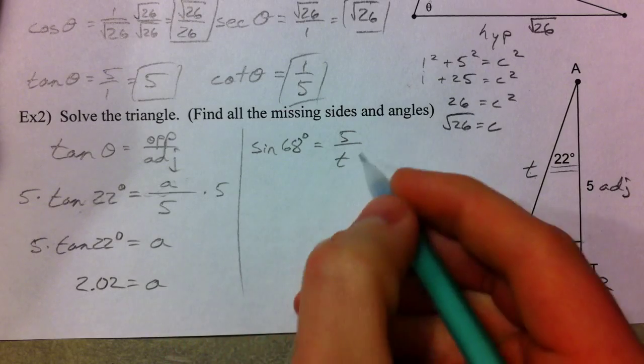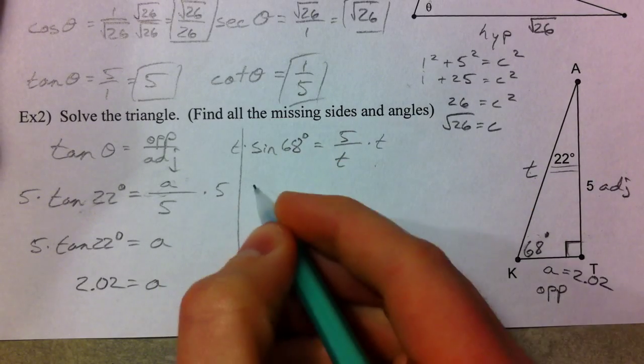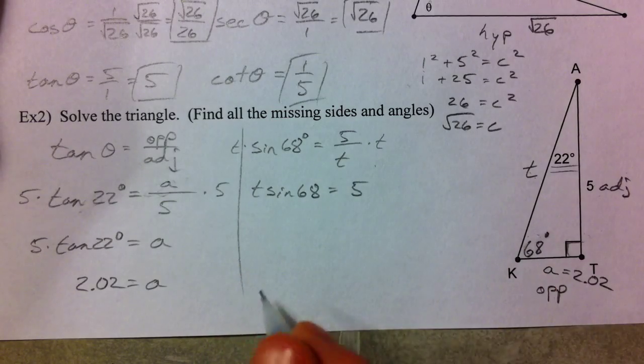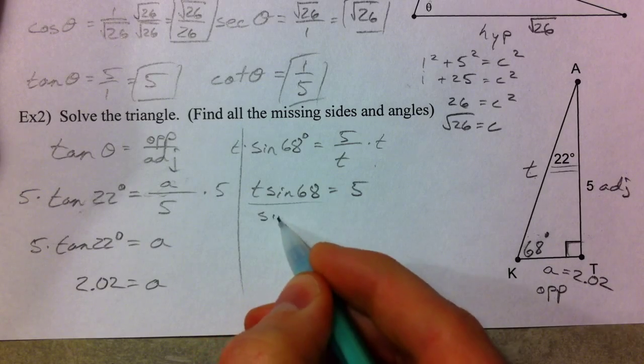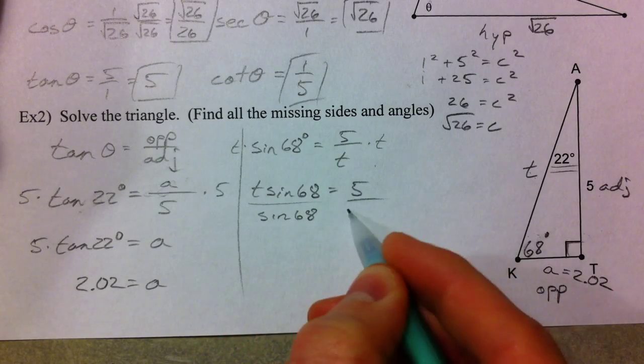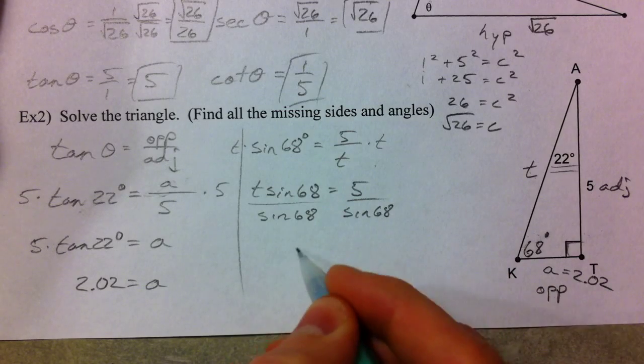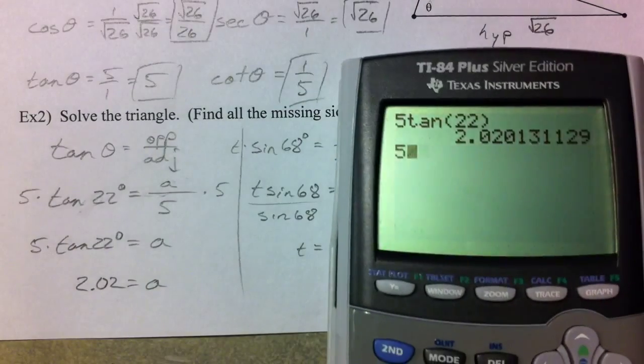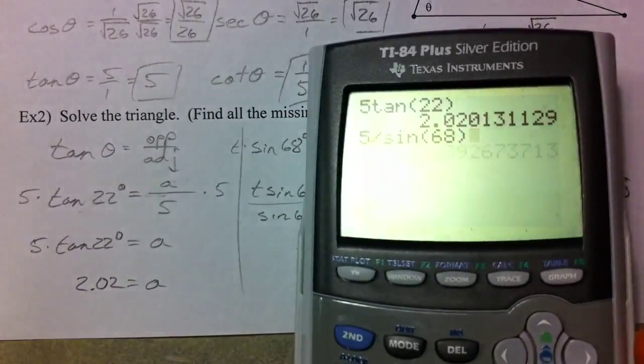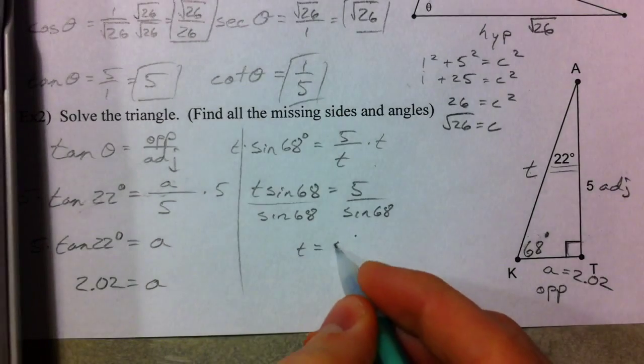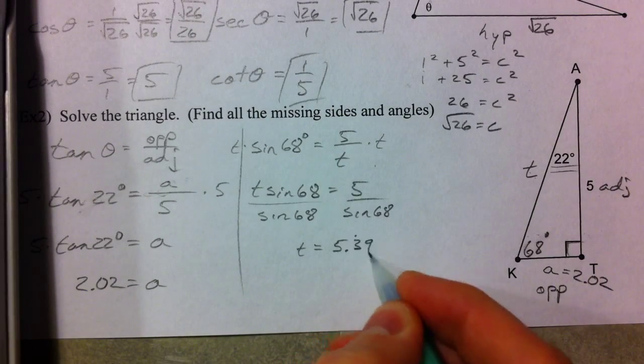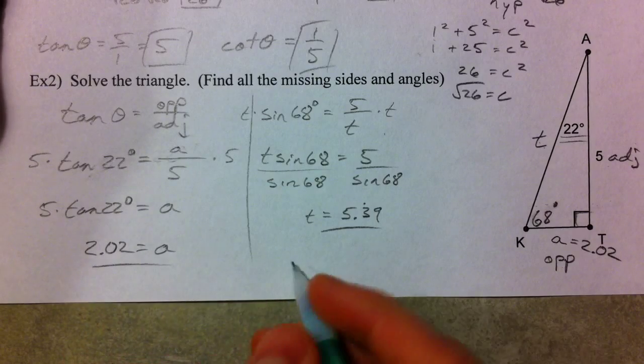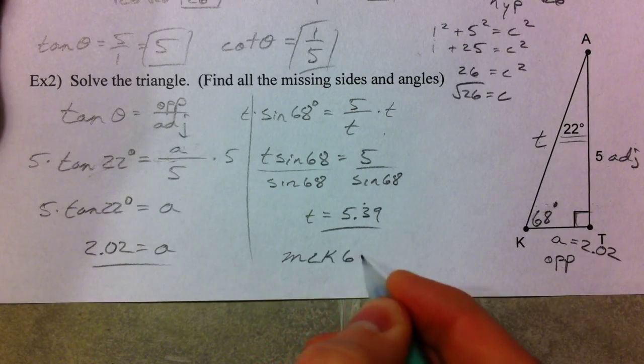So first thing I'm going to do is multiply both sides by T. T times the sine of 68 equals 5. Then divide by the sine of 68. And T equals 5 divided by the sine of 68. Again, we're in degree mode. 5.39. And so we found angle K. We found side T. And the measure of angle K, we said, was 68 degrees.